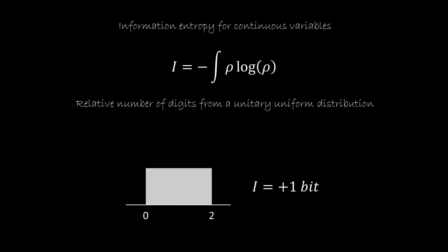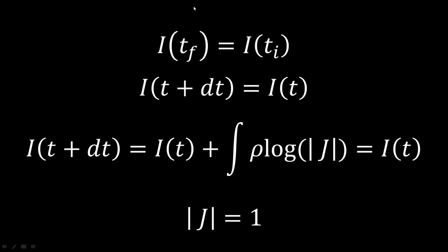So what we need to require for deterministic and reversible evolution is that the informational entropy remains constant through time. So we want the informational entropy of the final state to be the same as the one on the initial state. We are going to assume that our transformation is infinitesimal, so our final state is going to be t plus dt.